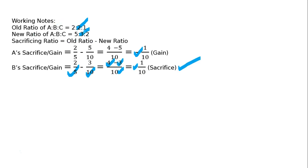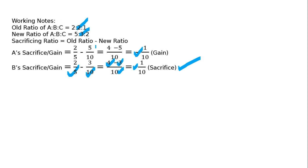For C: old ratio 1/5 minus new ratio 2/10. LCM 10 — 2/10 minus 2/10 = 0/10. There is no sacrifice or gain for C. So among A, B, C: A gains 1/10, B sacrifices 1/10, C has no change. Iska matlab hai jo revaluation ka profit aayega, uska treatment gaining to sacrificing hoga.